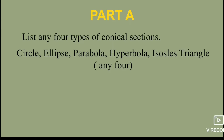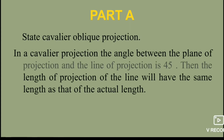The third question in Part A is about Cavalier Oblique projection. We are going to talk about the definition, carrying two marks. The line of projection and the plane of projection angle is 45 degrees. The length and height are the same — full scale.